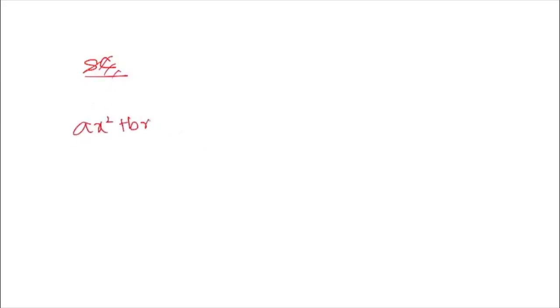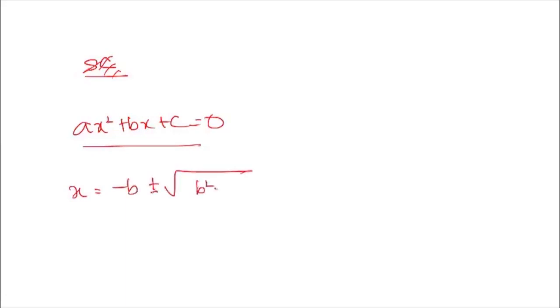I would like you to know the traditional method — the normal method used to solve the problem — because in case you don't remember the shortcut, this traditional method will come in handy. For the equation ax² + bx + c = 0, the solution is given by: x = (−b ± √(b² − 4ac)) / 2a, where a, b, c are constants.